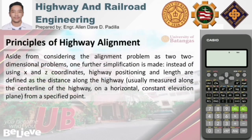Aside from considering the alignment problem as two two-dimensional problems, one further simplification is made. Instead of using x and z-coordinates, highway positioning and length are defined as the distance along the highway — usually measured along the centerline of the highway on a horizontal constant elevation plane from a specified point.